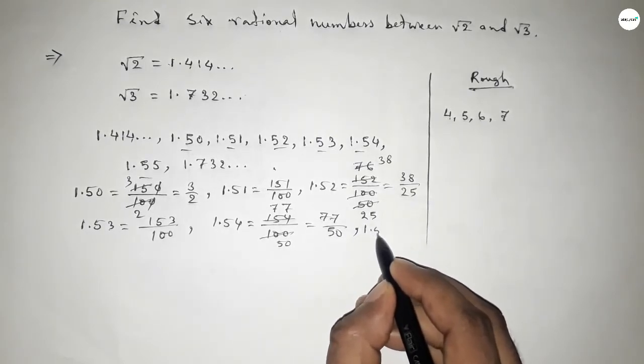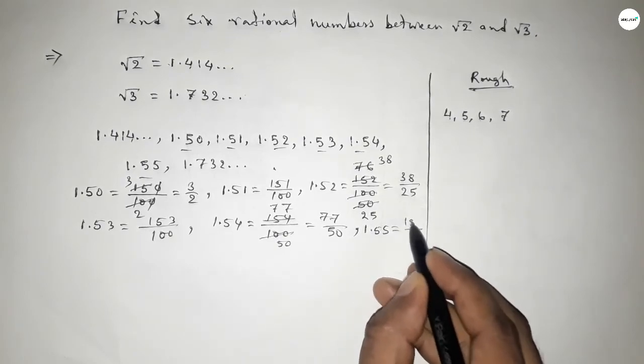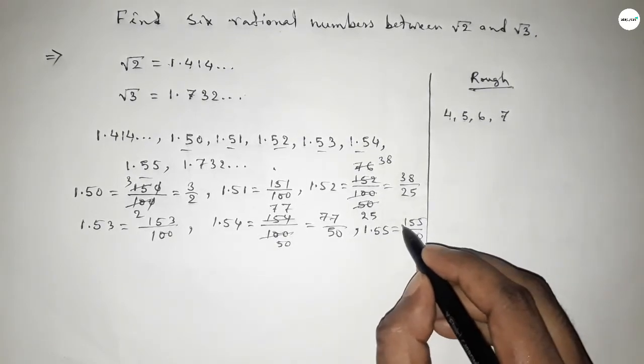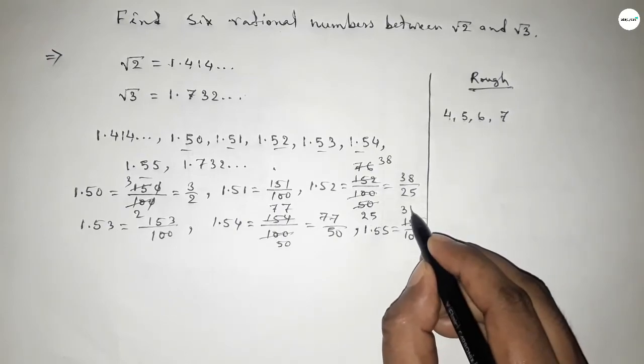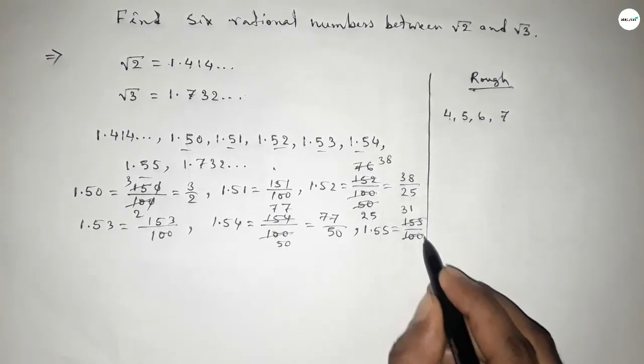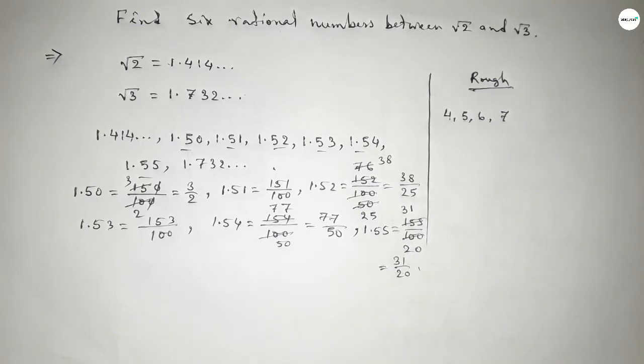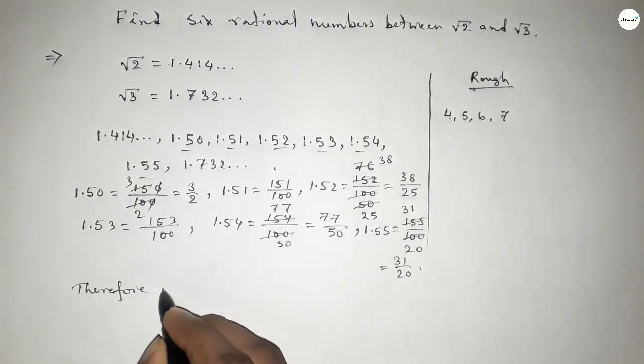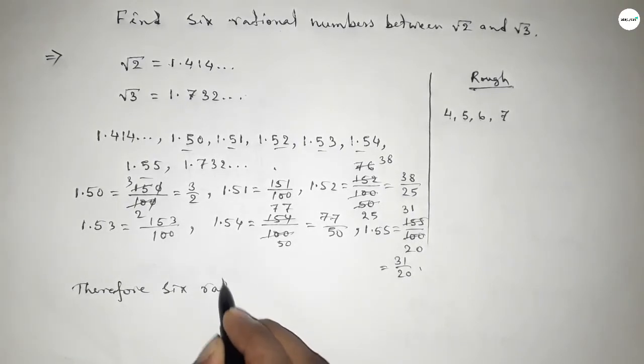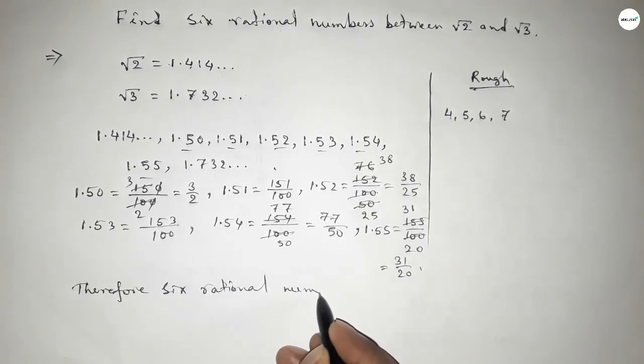And last one, 1.55 equal to we can write and simplify. If you divide both numbers by 5, this is 31 over 20.